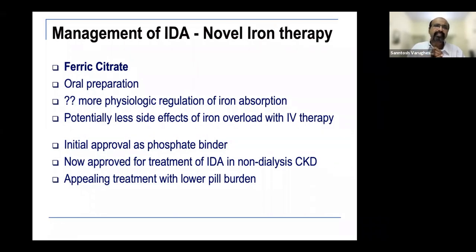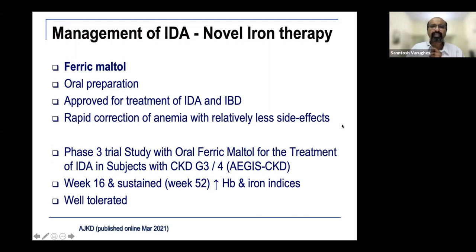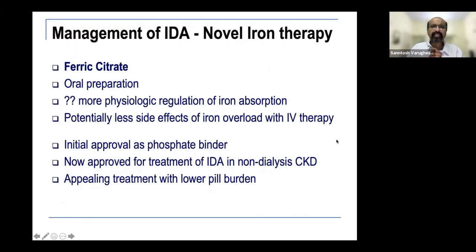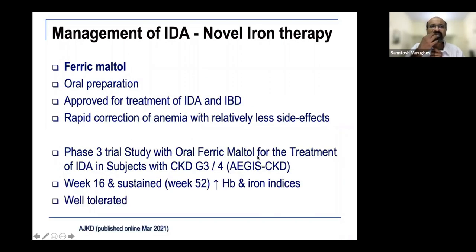Ferric citrate is emerging as a novel oral iron therapy with more physiological iron regulation. It came to market as a phosphate binder but is now approved for treatment of iron deficiency anemia. Its appeal is a potentially lower pill burden and less risk of iron overload side effects — allowing treatment of both iron deficiency and phosphate binding, though it is not as powerful a phosphate binder as existing agents.